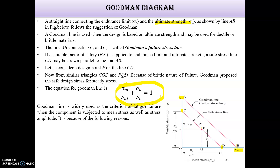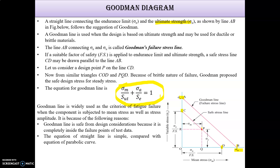Solving similarly to the Soderberg derivation, the Goodman equation is: Sigma M / SUT + Sigma A / Se = 1. The Goodman line is widely used as a fatigue failure criterion because it is completely inside the failure points of test data, its straight-line equation is simpler than a parabolic curve like the Gerber line, and no scale diagram is needed — a rough sketch suffices.